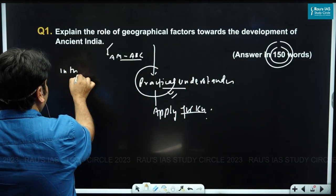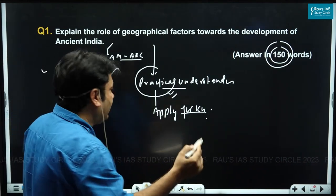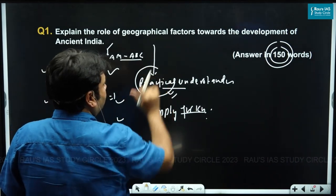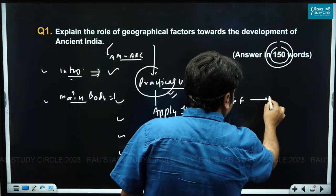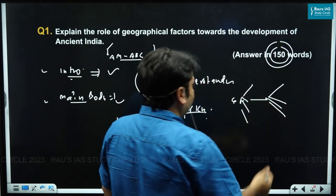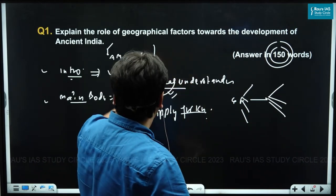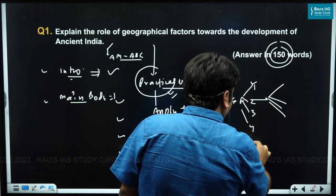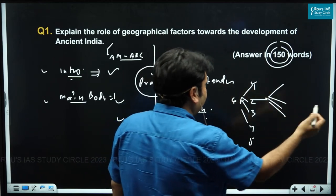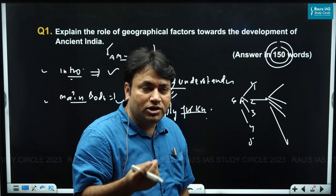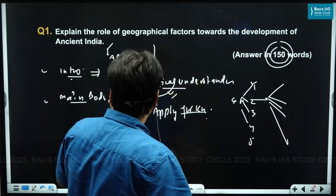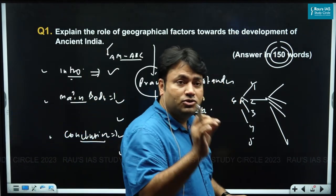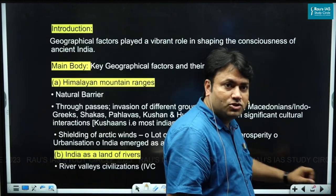To tackle this question, we write a simple introduction since there is not much scope. In the main body, we relate geographical factors to the most important developments in Indian history, writing different geographical factors and establishing their linkages with political, social, cultural, and religious developments in ancient India. Lastly, we write a very simple conclusion, keeping within the word limit.